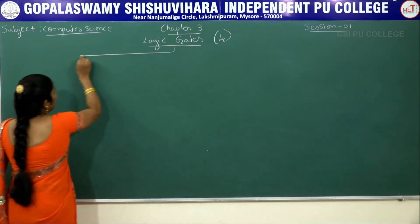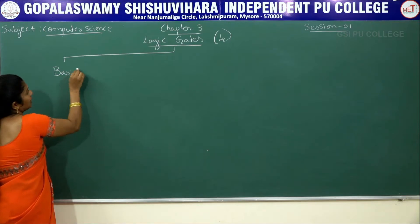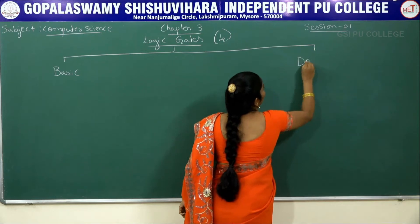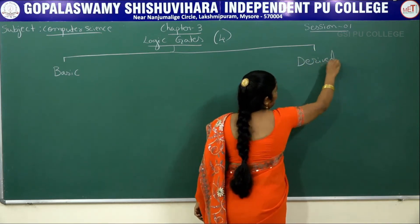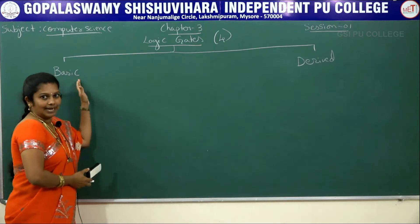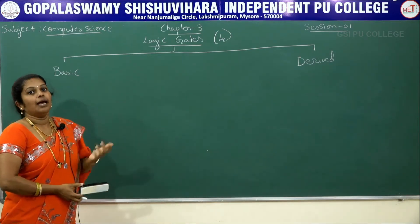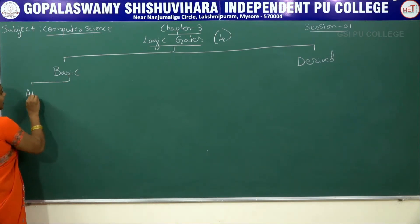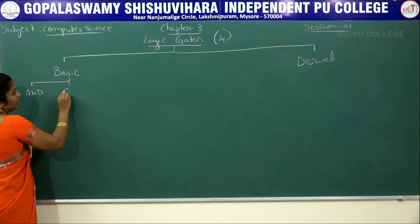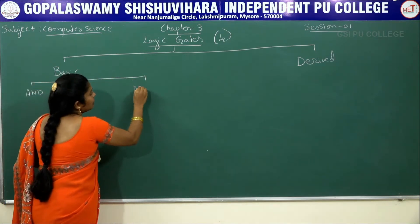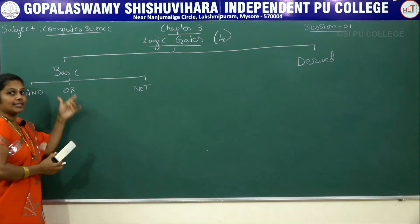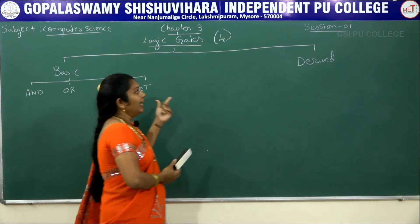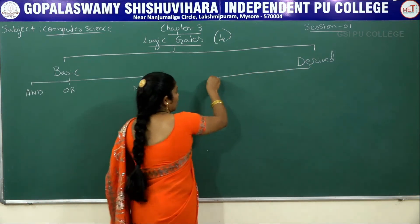In logic gates there are two types of gates. One is basic gates and another one is derived gates. In the basic gates you will get three types: one is AND gate, second one is OR gate, and the last one is NOT gate. These are the basic gates.